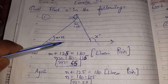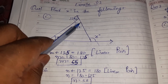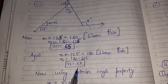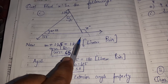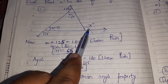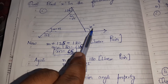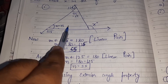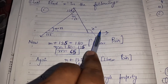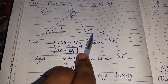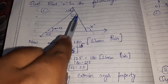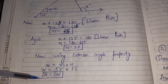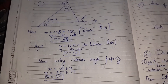So 125 plus M gives us the same case on both sides. M comes out to be 55 and N comes out to be 55. Now we have used the exterior angle property: the sum of two interior angles is equal to the exterior angle. X is the exterior angle and M and N are the interior angles. So X equals M plus N, which gives X equal to 110.